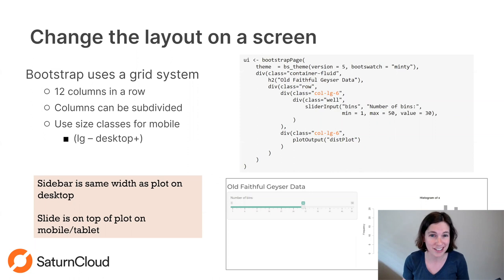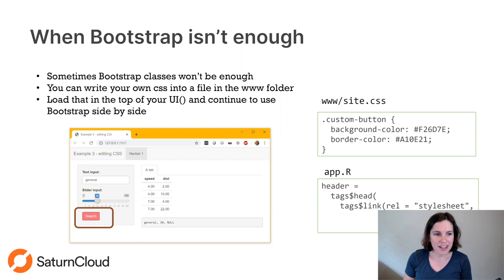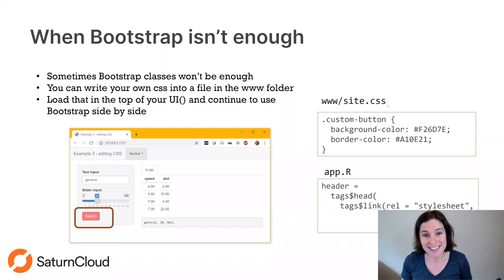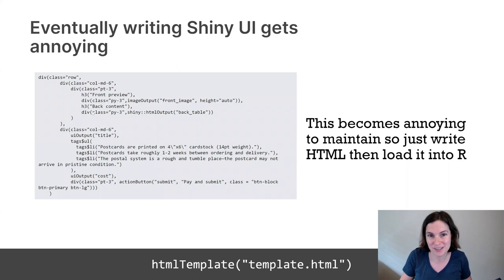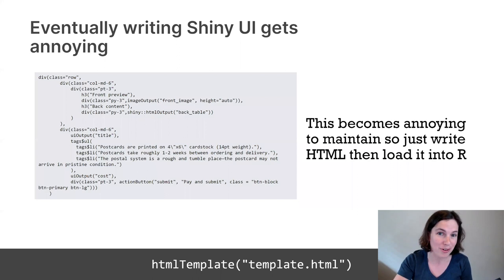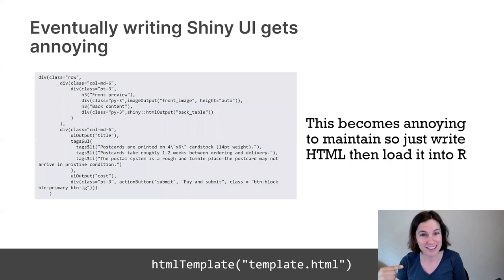Even if I don't want to use Bootstrap at all, I can make my own custom CSS styling. I can give my button a custom class and then make a CSS file that I load into Shiny, and use that within the app.r file. Eventually, you're writing so much HTML that you wish you could just write it directly as HTML instead of doing all these div commands in R. Shiny lets you use an HTML template to load up an entire HTML file if you want. The road from only knowing Shiny R commands to actually uploading your own HTML and CSS — there's a whole path you can take.